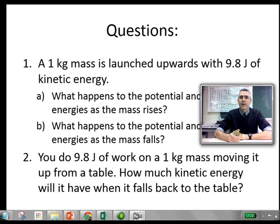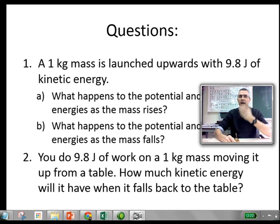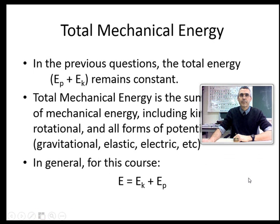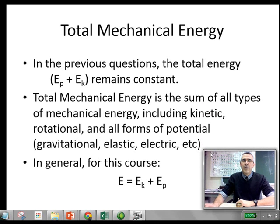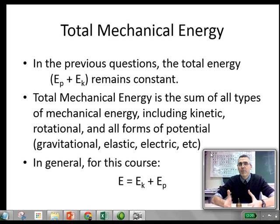If I do 9.8 joules of work bringing it up from the table and let it go, how much kinetic energy will it have when it falls back and hits the table? As the potential energy falls and kinetic energy rises, when it gets to the table, all of the energy will be in the form of kinetic energy — so once again, it will have 9.8 joules. The total energy remains constant. We use the term total mechanical energy to describe the sum of all types of energy that an object or a system has.